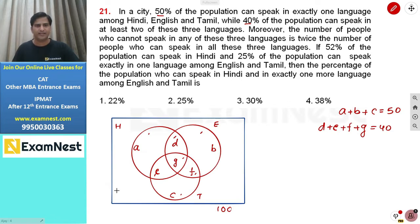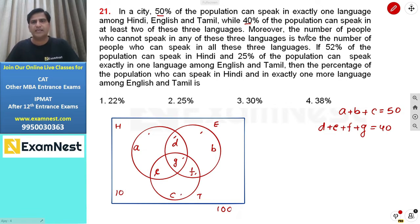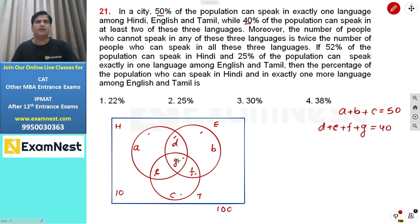So the remaining 10% are people who cannot speak any of these three languages. Among those who speak all three, that represents G. Using this, we can derive that G equals 5.